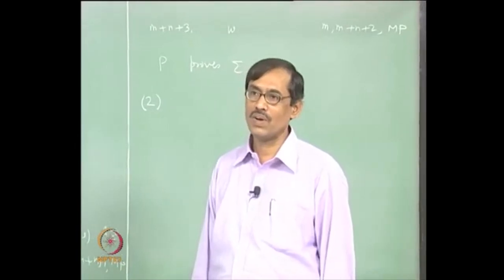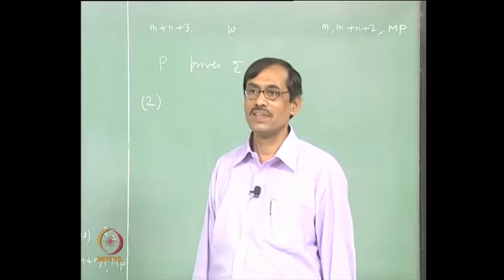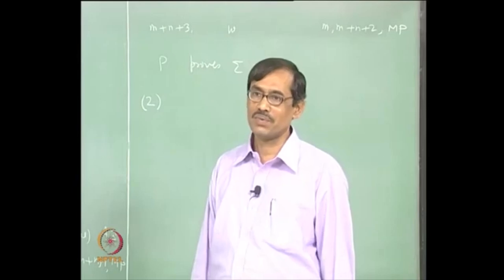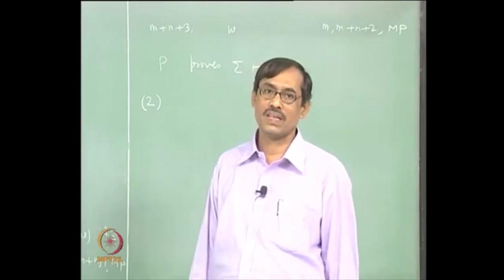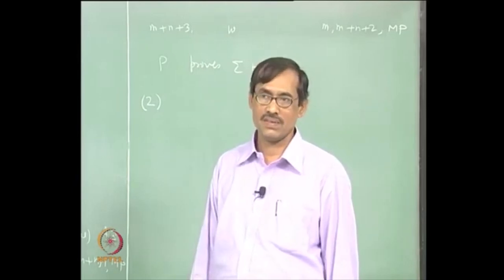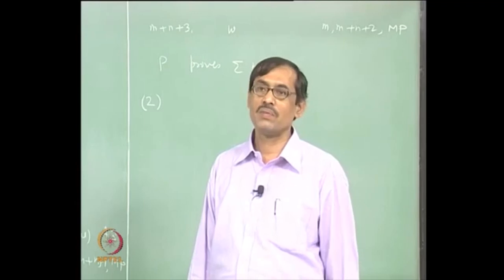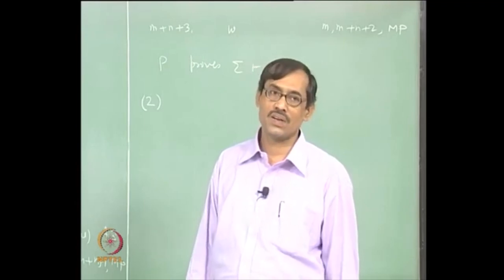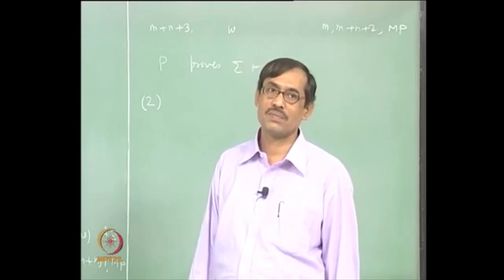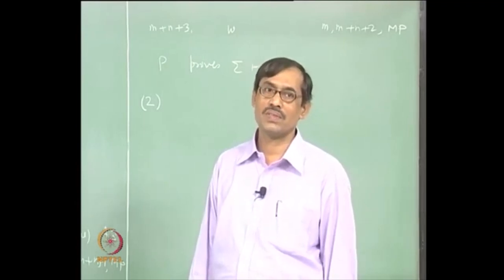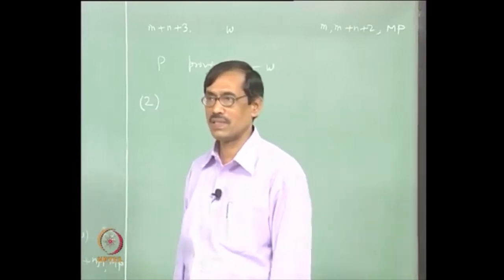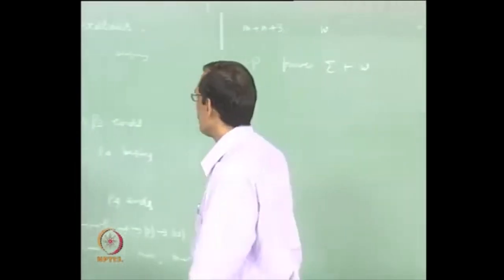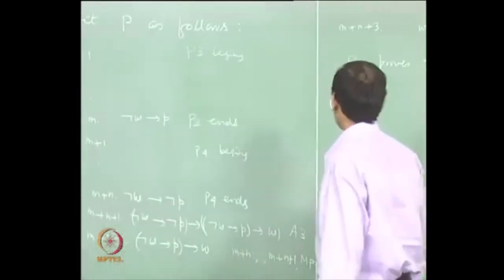You have w now — w is a premise, there is a one-line proof. So sigma union w entails w, and sigma union w entails not-w. Therefore sigma union w is inconsistent. So we do only the converse part.